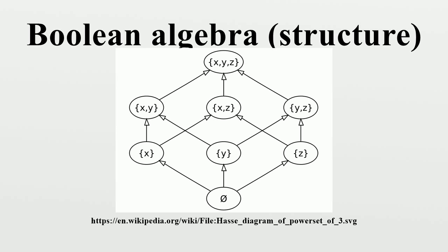Removing the requirement of existence of a unit from the axioms of Boolean algebra yields generalized Boolean algebras. Formally, a distributive lattice B is a generalized Boolean lattice if it has a smallest element 0 and for any elements a and b in B such that a ≤ b, there exists an element x such that a ∨ x = b and a ∧ x = 0.